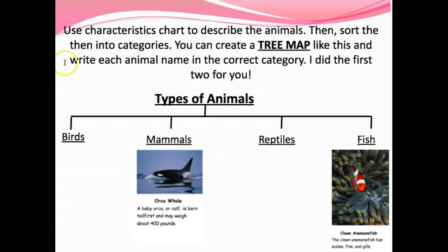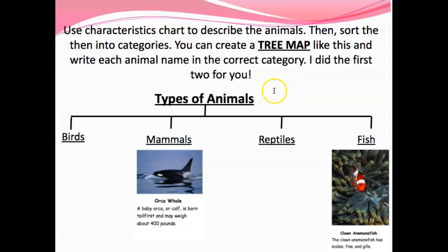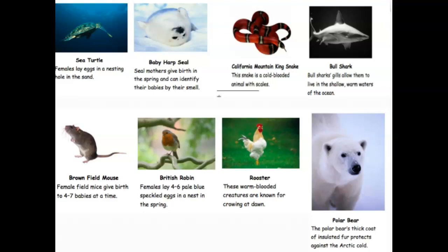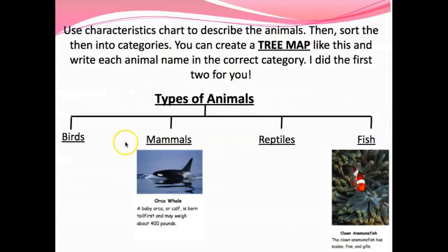I'm going to show you some pictures of different animals and you're going to look back at this characteristic chart to help sort them into groups. I would like you guys to create a tree map. Remember a tree map has the title at the top and then the sub-categories below. Pause here and create a tree map — you're going to write 'types of animals' and then birds, mammals, reptiles, and fish. I'm going to show you some pictures and you're going to sort those into your tree map.